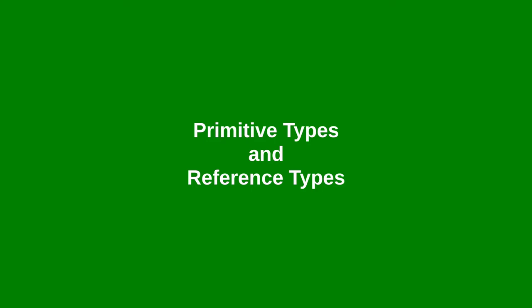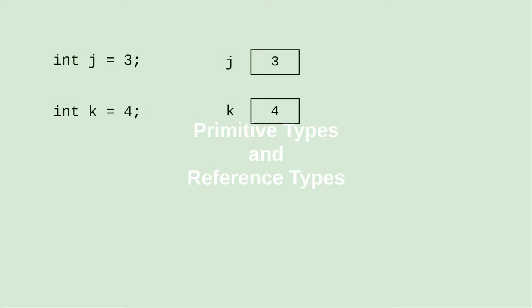When we deal with primitive types like int, double, char, and boolean, the data is stored directly in the memory address for the variable.